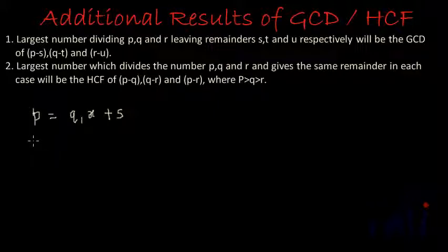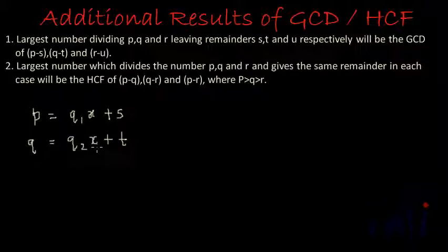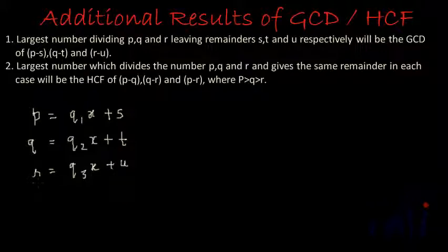Similarly, when X divides Q, Q2 times, it leaves remainder T. And when X divides R, Q3 times, it leaves remainder U. So R can be written as Q3 times X plus U. When it divides P it leaves remainder S, when it divides Q it leaves remainder T, and when it divides R it leaves remainder U.